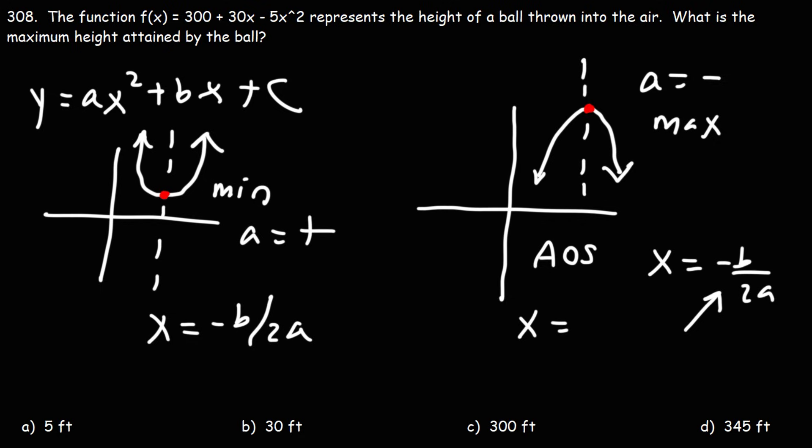Now, for this situation, we want to find the maximum height attained by the ball. Notice that we have a negative in front of the x squared, so we're going to have this kind of trajectory. In other words, the ball is going to go up, reach its maximum height, and then go down.